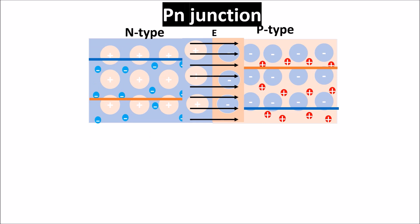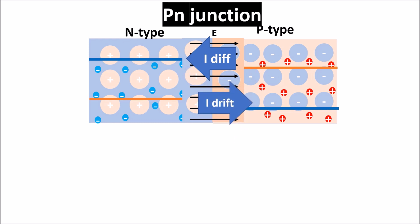This creates an electric field in the depletion region. So at the junction, and only the junction, electrons and holes start to diffuse, thus creating a diffusion current. Where electrons and holes bind to atoms, a depletion region and an electric field are created. This electric field opposes the diffusion current, because it pushes electrons back to the N region and holes back to the P region. So a drift current due to the electric field is created. As the depletion region gets wider, the electric field and drift current increase until they stop the diffusion current, and we arrive at a stable condition in which drift current equals diffusion current.